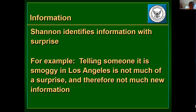In Hamming's example, he gives smoggy in LA — not much of a surprise. But it's fun to read that he says, if it's raining in Monterey in June, that would be a surprise. Indeed, today is May 15th and it's not raining — so that's not surprising. But if it was raining, that would be an alert. We have a weather system because of the surprise; the nature of that information is valuable to people. They can act on it if they know about it.